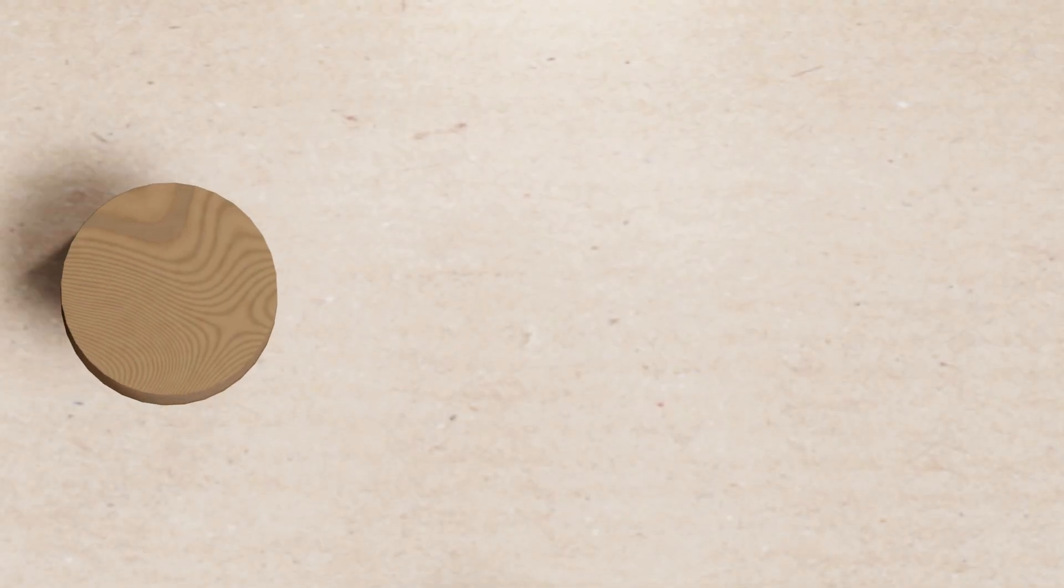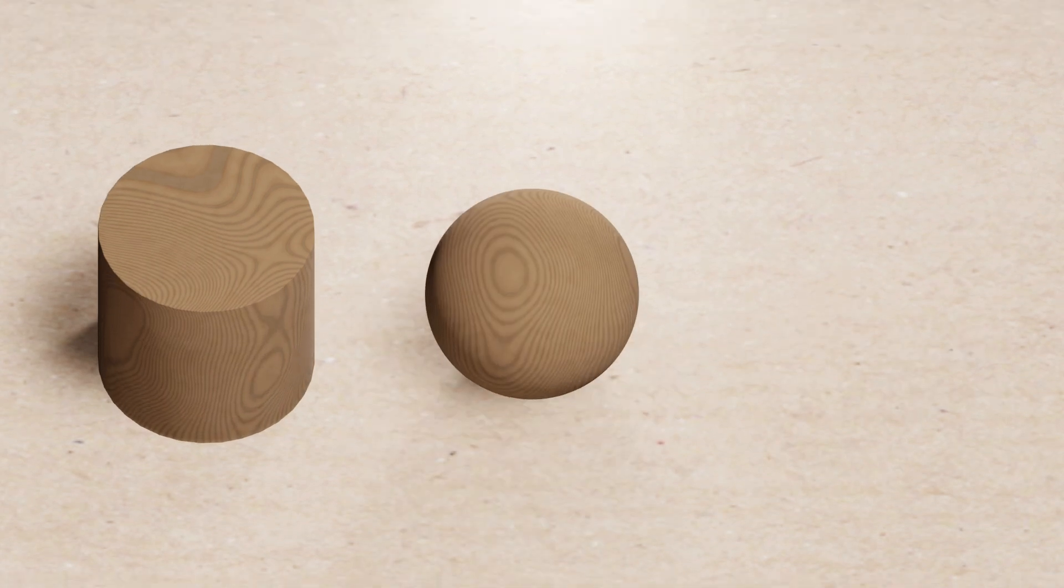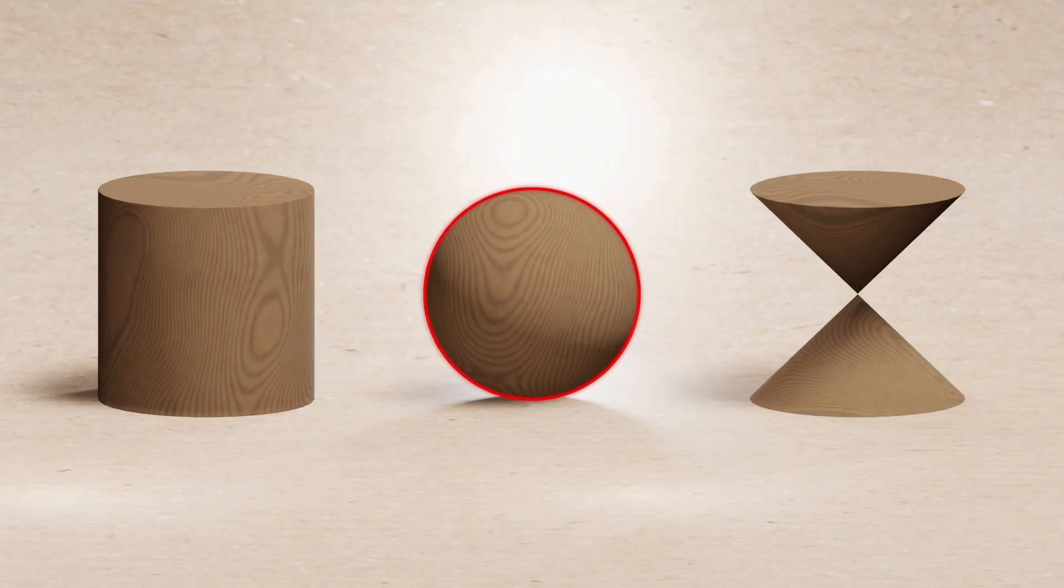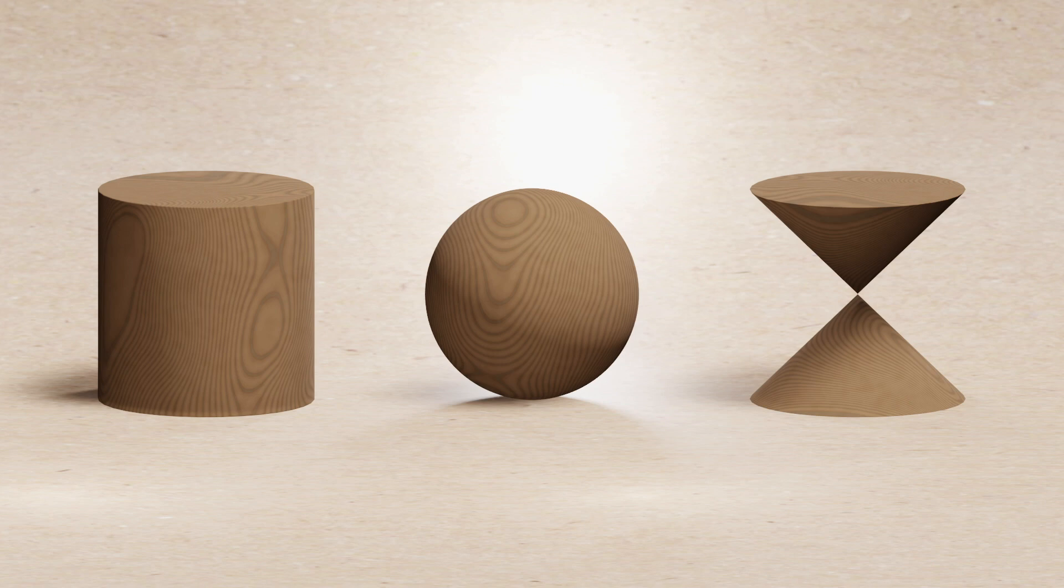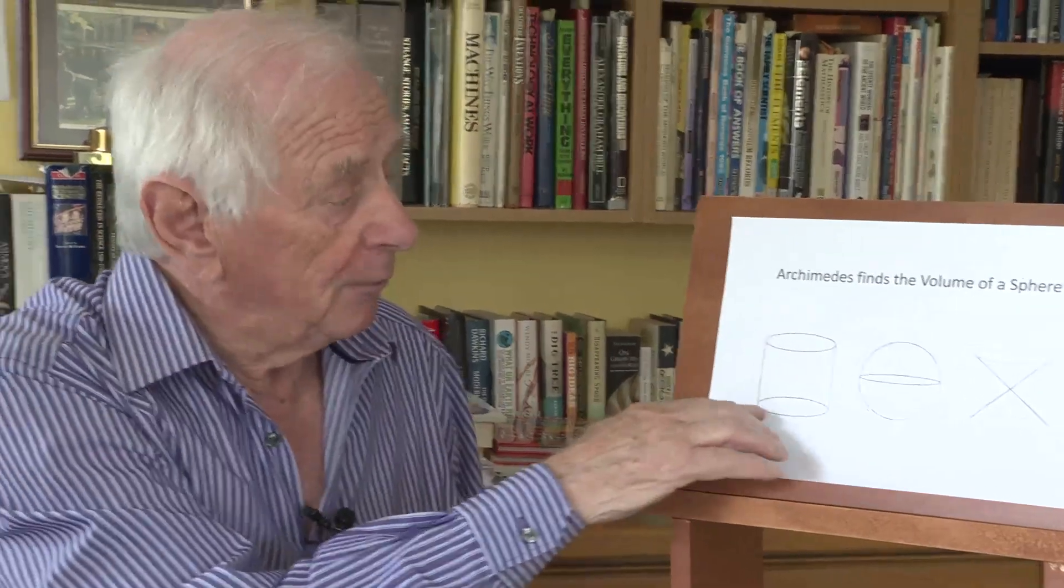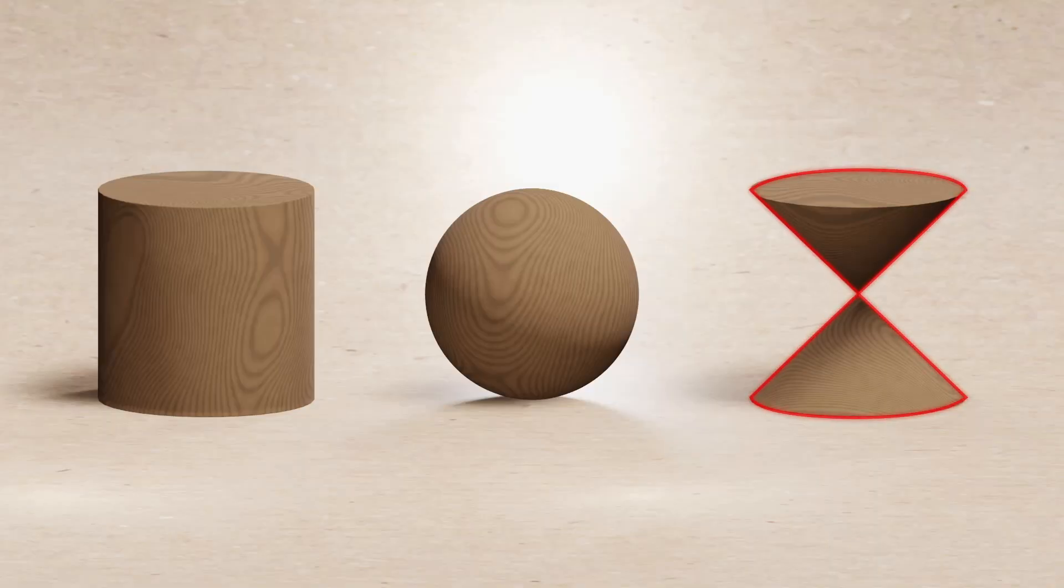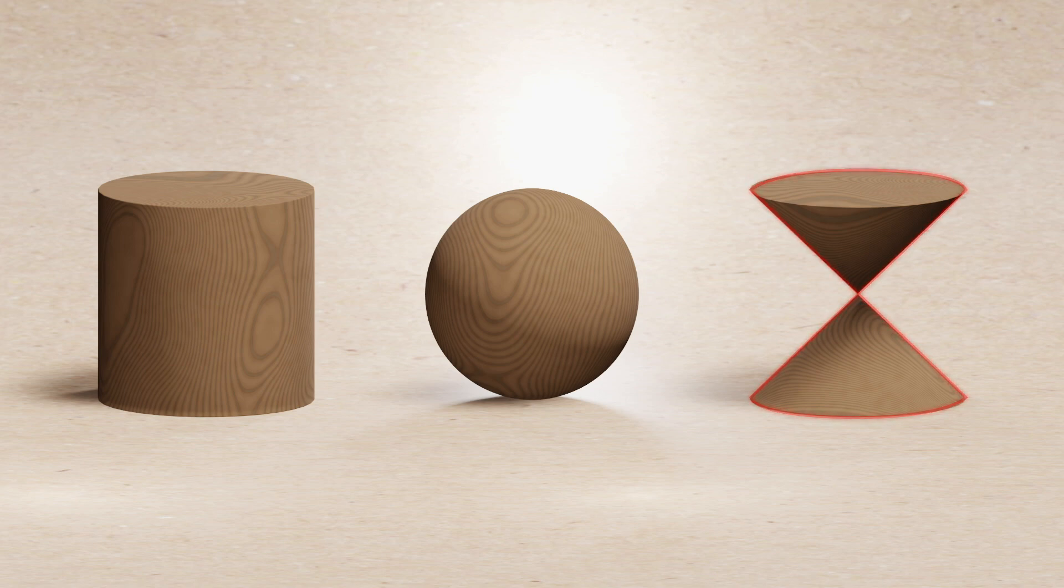He produced a cylinder and a sphere and something called a double napped cone. So there's the sphere and the cylinder is the same width and the same height. He could have made them out of wood or clay, pottery, I don't know. But anyway, he had them made or made them himself. And this double napped cone, which is two cones that meet in the middle. Once again, same width, same height.